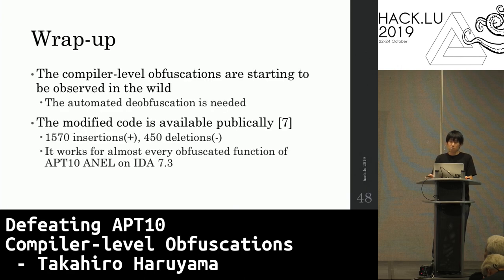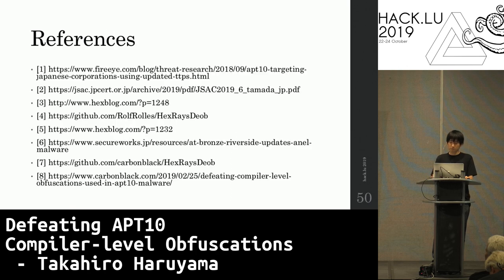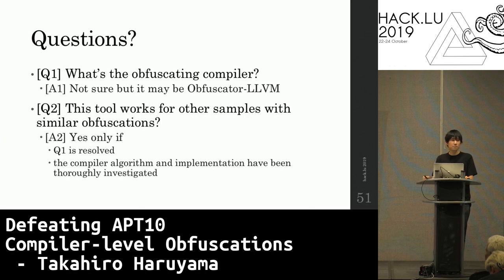To wrap up: compiler-level obfuscations such as opaque predicates and control flow flattening are starting to be observed in the wild. Manual analysis is not realistic, so automated de-obfuscation is needed. The modified code of hexrays.deop is available publicly. It works for almost every obfuscated function of APT10 ANL samples on IDA 7.3. For this research, I'd like to thank hexrays for their patient support and the original authors. Last but not least, the coaching members, especially Jarrett and Brian. Thank you.